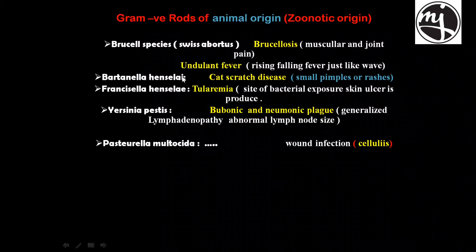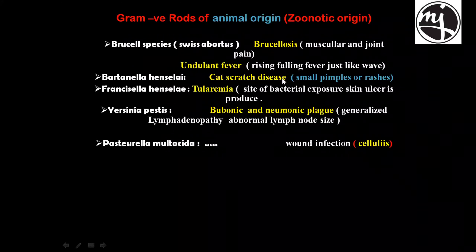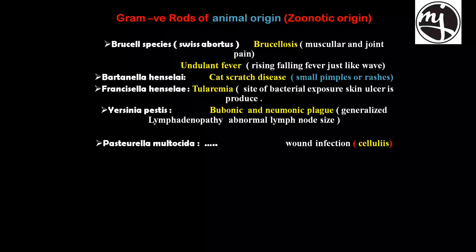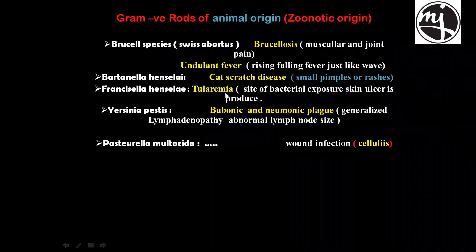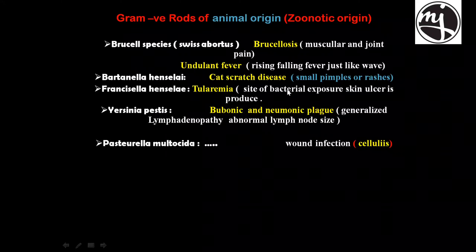Bartonella henselae causes cat scratch disease — when a cat scratches, it produces small pimple-like rashes on the body. Francisella tularensis causes tularemia, where at the site of bacterial exposure a skin ulcer is produced.